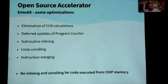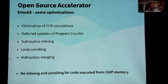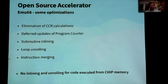One change from last time: for code executed from chip memory, there is no inlining or unrolling of loops, because this greatly increases the time needed to access memory. So this kind of optimization is simply disabled for that part of the code.